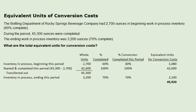Under Process Cost Systems, in the Cost of Production report, equivalent units of production must be calculated. In this exercise, we will compute the equivalent units of conversion costs.